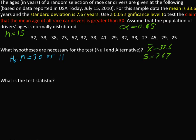Versus HA. What is the claim again? Greater than 30. So mu greater than 30. That is the null and alternative hypothesis.